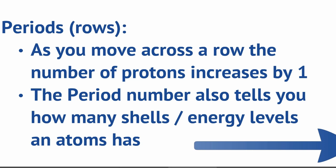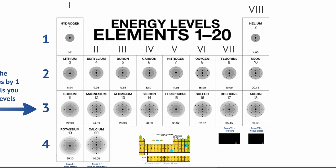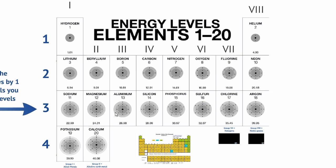The period number also tells us how many shells, or layers of electrons, the atom has. Period 1 elements all have one shell or one layer. Period 2 elements all have two shells. Period 3 elements all have three electron shells or layers, and period 4 have four. This is quite handy — if you're asked how many shells sulfur has, you can just look at it being in period 3, so the answer is 3, rather than working out that sulfur is element 16, has 16 electrons arranged 2, 8, 6 — three shells.